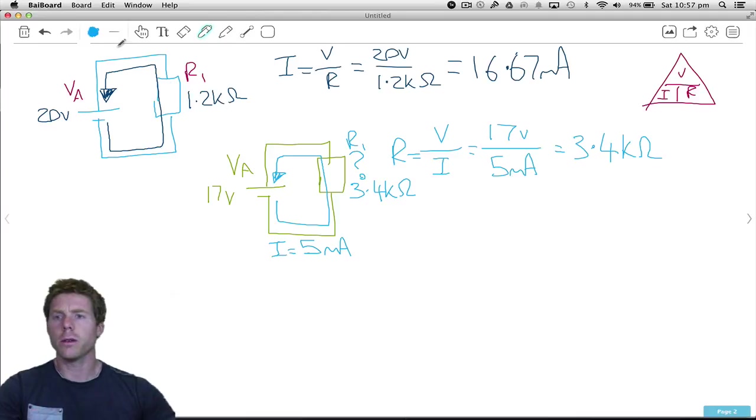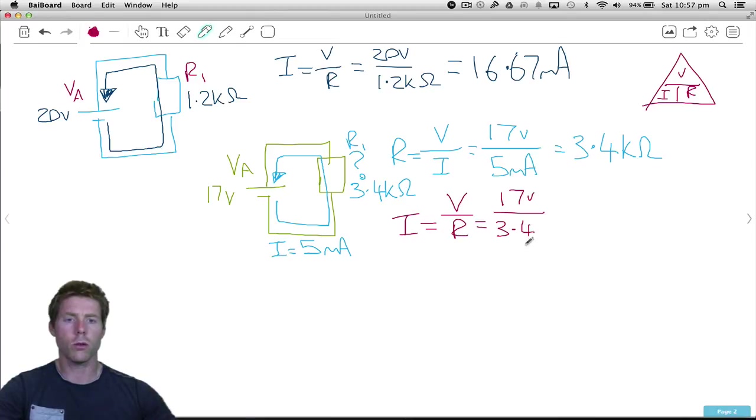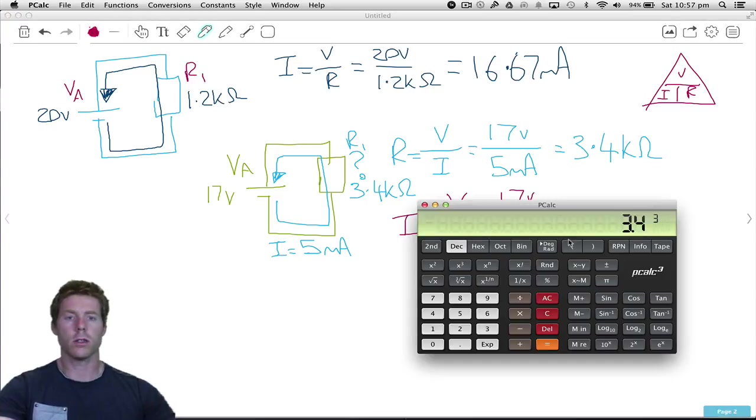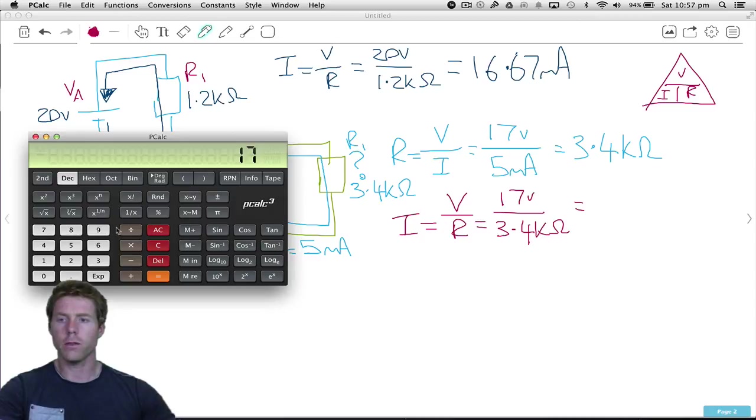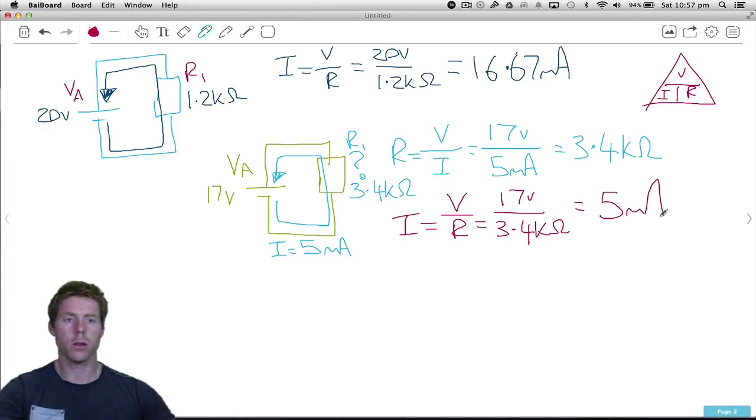Let's double check our answer. Current equals voltage divided by resistance. The voltage of the circuit is 17 volts. The resistance we just calculated to be 3.4k. This theoretically should give us 5 milliamps of current but let's just double check. 17 volts divided by 3.4 exponential 3 and we get 5 milliamps. Give yourself a tick as long as you get that.